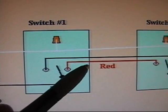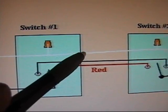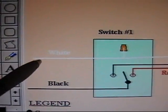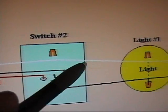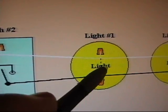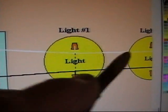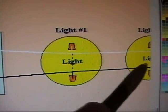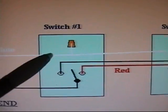If you notice, the neutral goes straight across uninterrupted and connects to one light. Here they got two lights in parallel, but it doesn't matter whether you got one light or six lights, it doesn't really matter. The hookup is the same. This is switch number one.